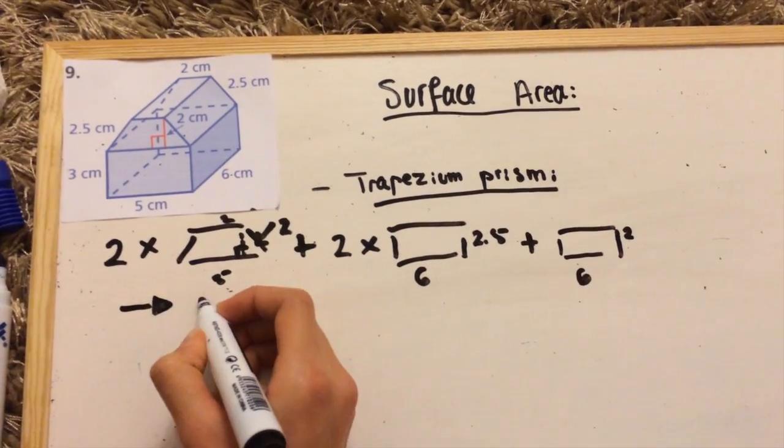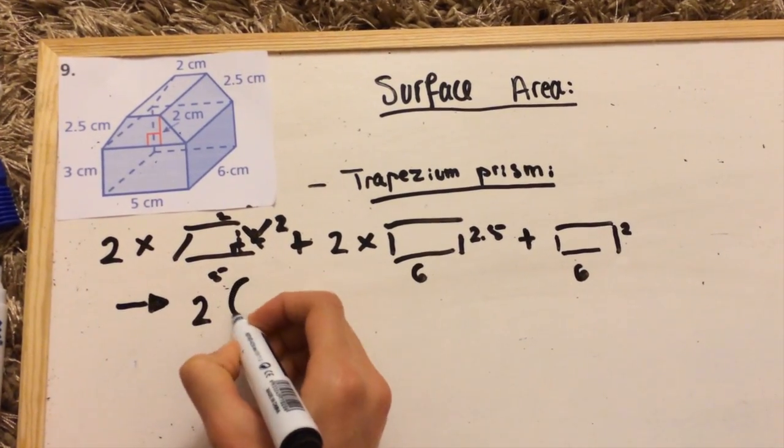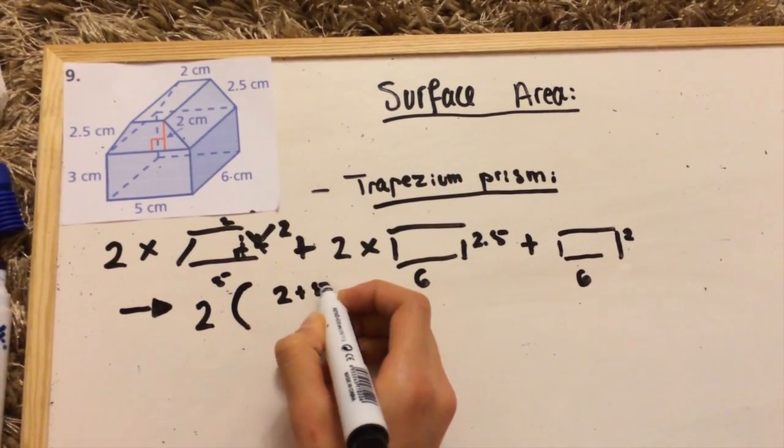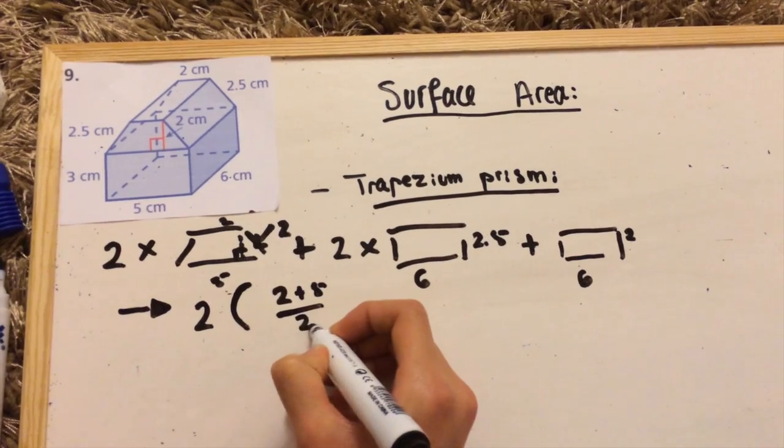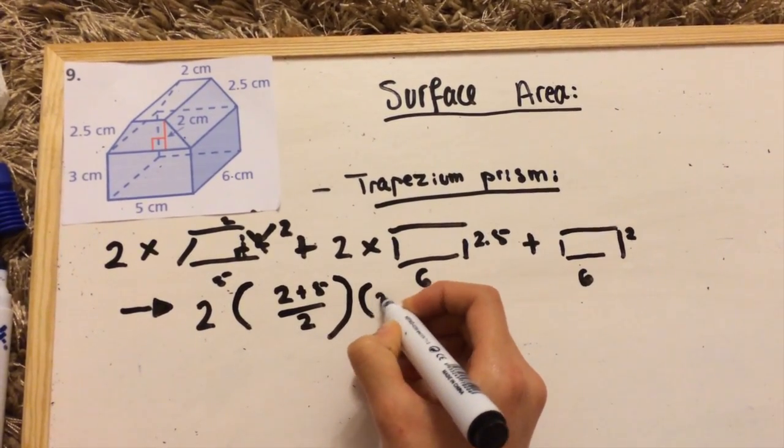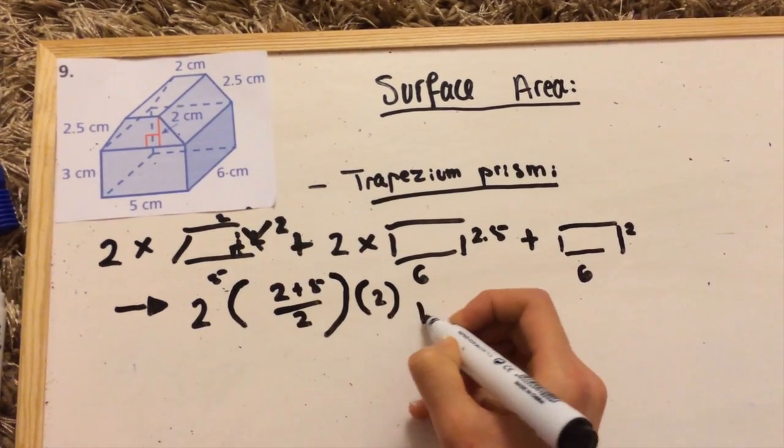Now we're going to put our formulas in. The formula for finding the surface area of the trapezium is (a+b)/2 times height. And since there's two of that, we multiply that by 2. So that's (2+5)/2 times 2.